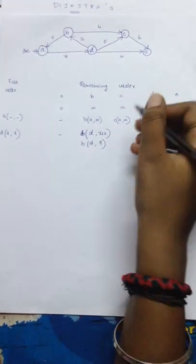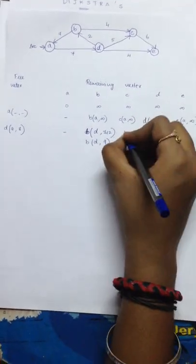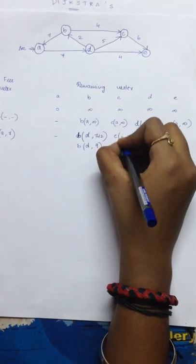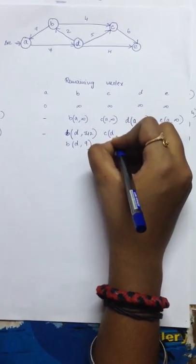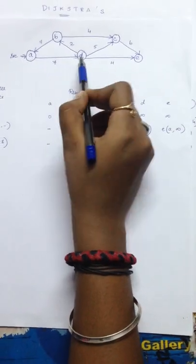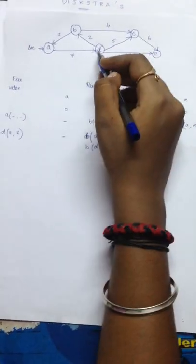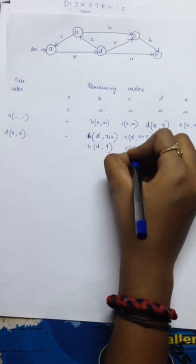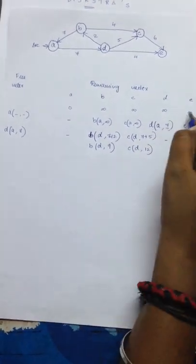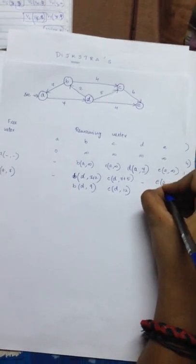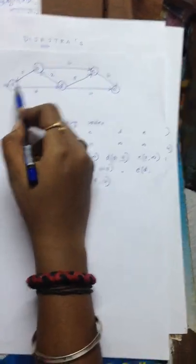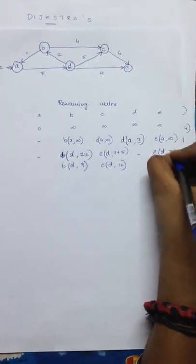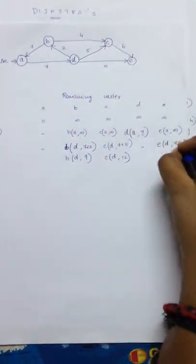B, D comma 9. The same way for C. C can be accessed through D at a rate of A to D is 7 plus D to C is 5. Which will be 12. Now similar for E. You can access E through D by A to D will be 7 plus D to E will be 4.